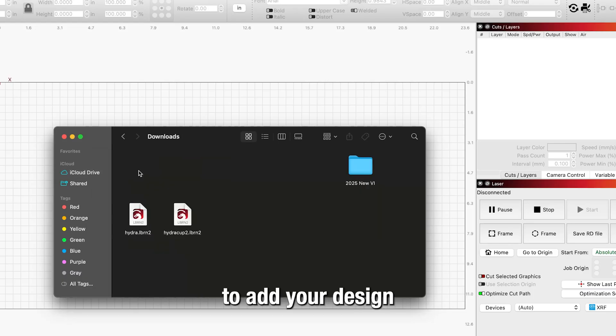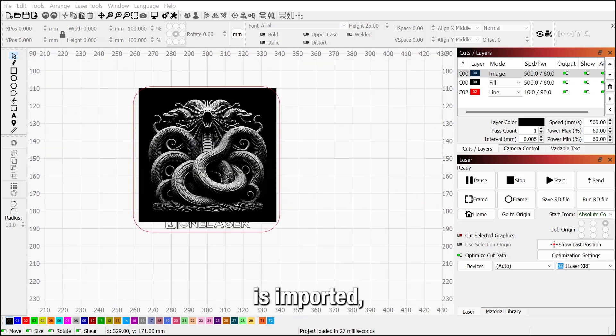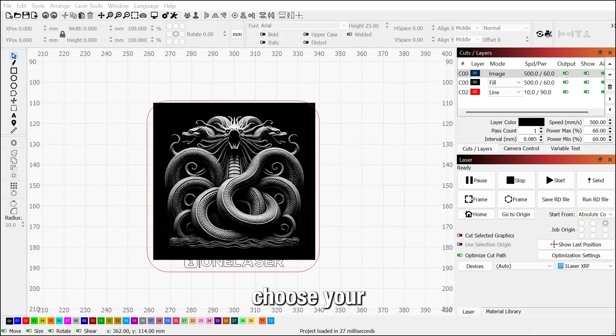To add your design, click on File in the top left, then Import, and find your file wherever you have it stored. Once your file is imported, choose your origin location. We recommend the top left, but you can choose anywhere you want.